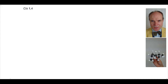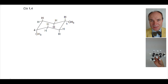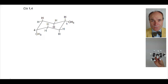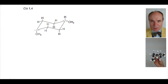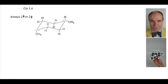CIS-1,4-disubstitution patterns have the methyl groups attached to carbons 1 and 4 of the cyclohexane ring, while CIS tells us that both methyl groups are on the same side of the ring. So if we drew a horizontal dotted line through one of the ring carbons, both methyl groups would be either above, up from the line, or below, down from the line.